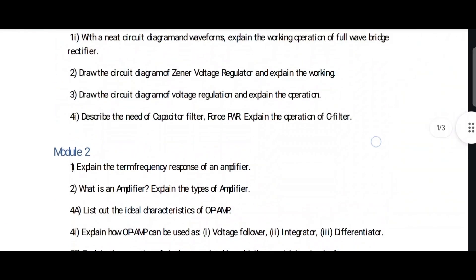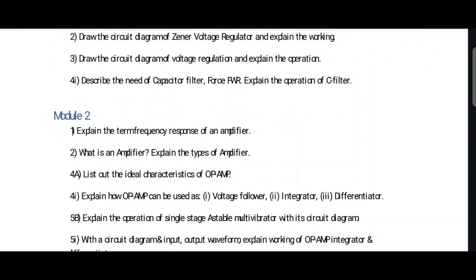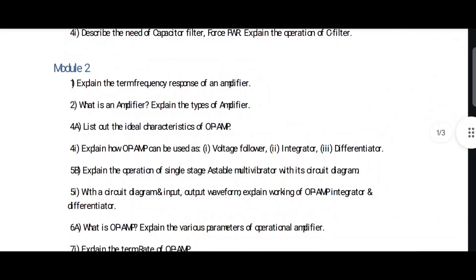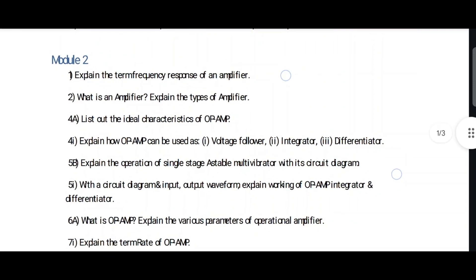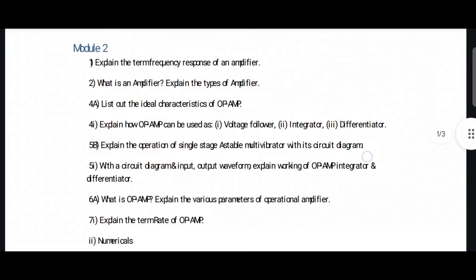Now let's go into Module 2. First: 'List the ideal characteristics of an op-amp' — very important. Then: 'Explain how op-amps can be used as a voltage follower, integrator, and differentiator' — very important. Also: 'Explain the operation of a single-stage RC coupled amplifier with circuit diagram and input-output waveforms.' Op-amp integrator and differentiator are also important. Then: 'Explain the various parameters of an operational amplifier.' Finally: 'Explain the term slew rate of op-amp' — numericals may also come in Module 2.